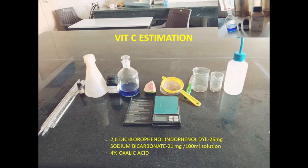To the 0.5 ml filtrate in the beaker, add 2.5 ml of 4% oxalic acid. Then titrate this sample with the dye already prepared — the 2,6-dichlorophenol-indophenol dye with sodium bicarbonate.